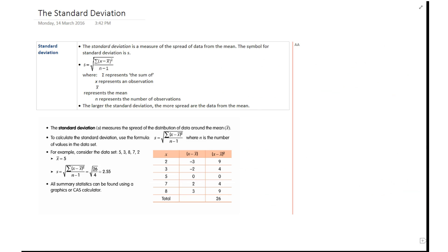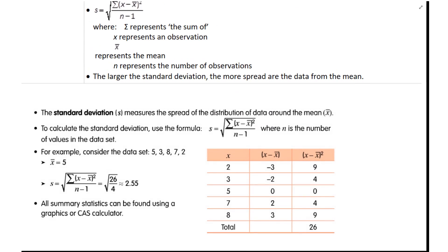Standard deviation measures the spread of the distribution around the mean - it's looking for that variance around the mean. Here's your formula. Here's the value you've got from this set of data. You could do a calculation if you really wanted to, but don't. Use your calculator.